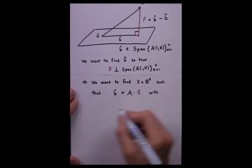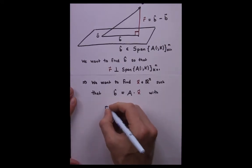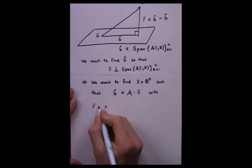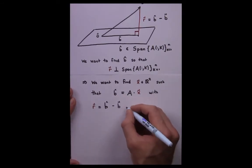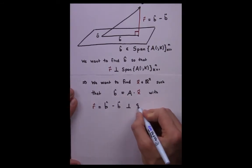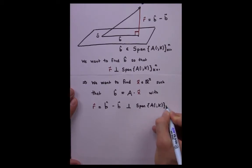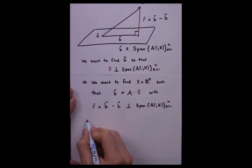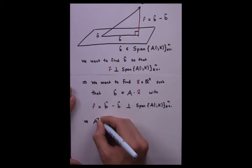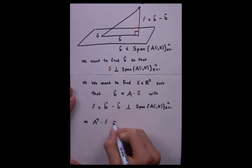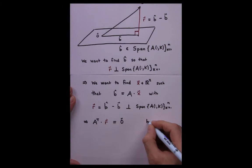By definition, we knew that R was B hat minus B. By a theorem, we know that R is perpendicular to the span of the columns of A. R is perpendicular to B hat if and only if A transpose times R is equal to zero.